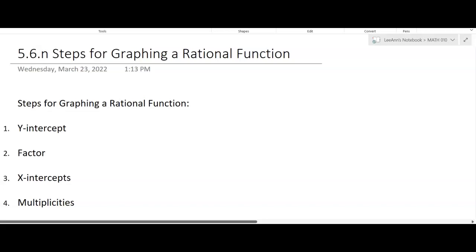So the steps for graphing a rational function. Usually they don't give it to you in a factored form, but you're going to have some function, f of x. And you're going to find the y-intercept. So you're going to find f of 0. It's easier to do that before you do the factoring.